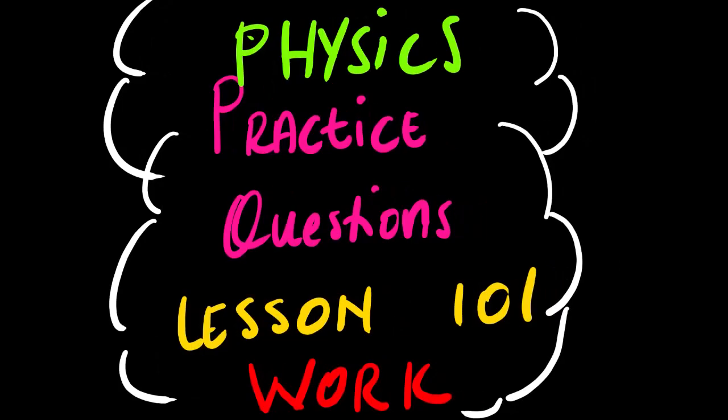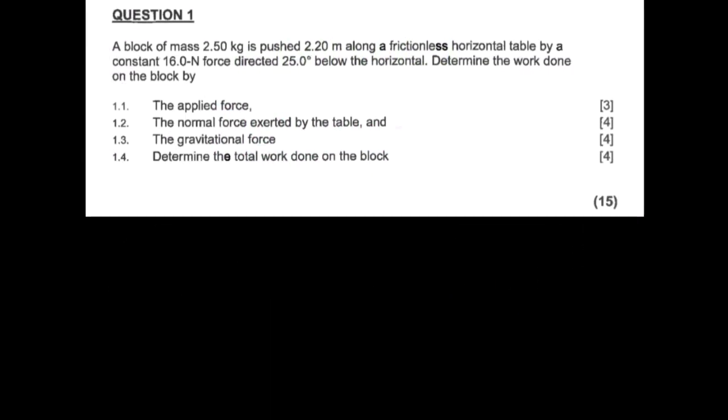Today's lesson we are going to look at physics practice questions, lesson 101. The topic for today will be based on work. A block of mass 2.50 kg is pushed 2.20 meters along a frictionless horizontal table by a constant 16.0 Newton force directed 25.0 degrees below the horizontal. Determine the work done on the block by the applied force — the mark allocation is 3 marks.